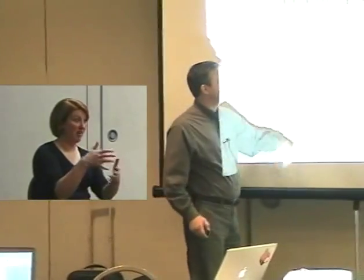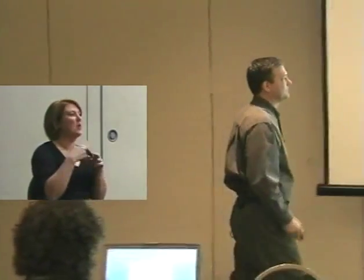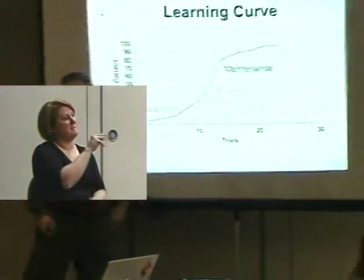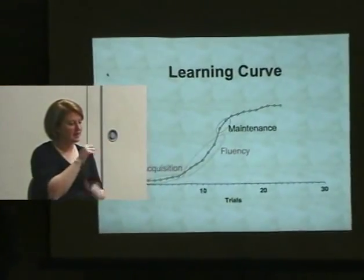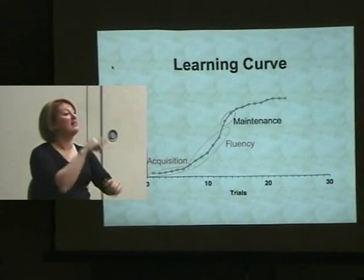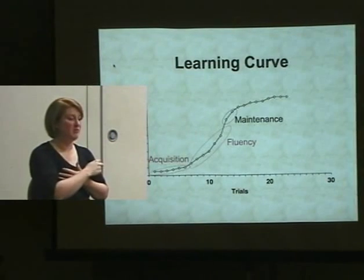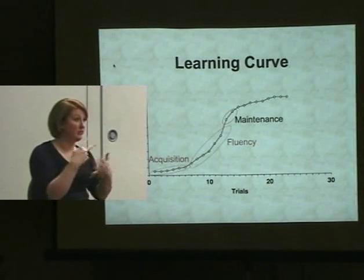When we're measuring fluency, what we're interested in knowing is, is the kid doing a bunch of it? Once they're fluent, what we want to know is, can they continue to do this if we don't do it for a day or two? Can they remember it? We call that maintenance. When we're interested in measurement at the maintenance stage, we're saying, can this kid remember to do something? If we do a review, will they get the right answer?